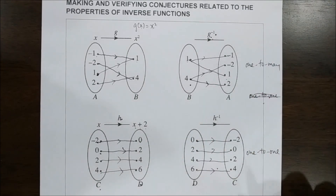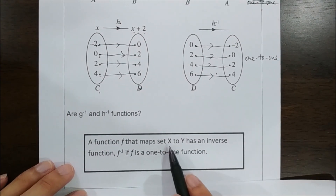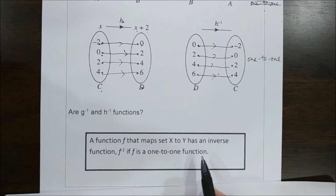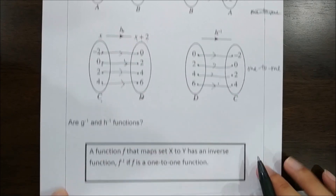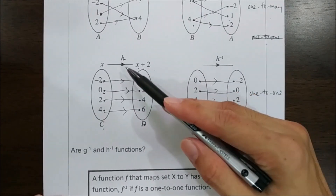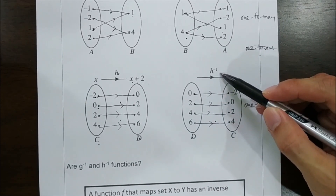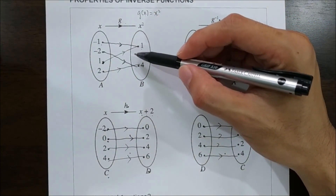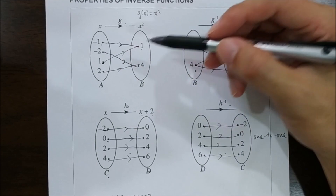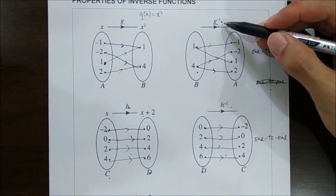Only a one-to-one relation or many-to-one relation can be considered a function. From this example, we can conclude that a function f mapping set X to Y has an inverse function f-inverse if f is a one-to-one function. In short, if a given function is one-to-one, then the inverse function exists. If the given function is many-to-one, then the inverse function does not exist.